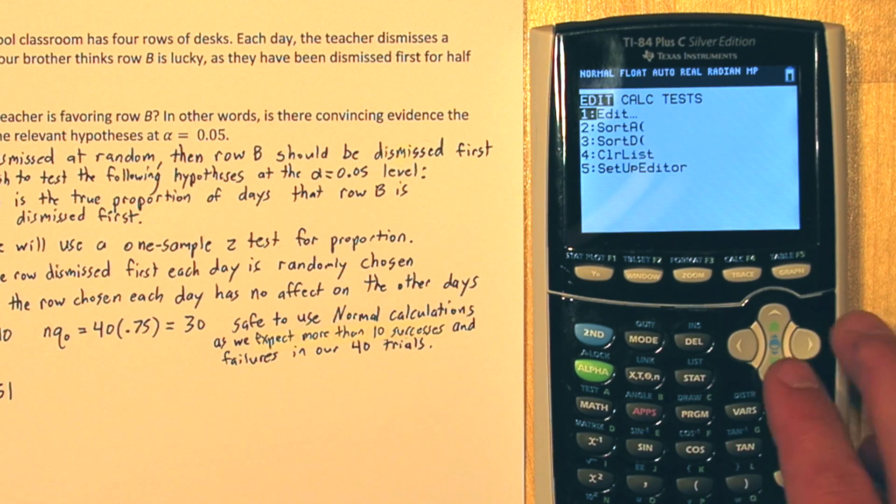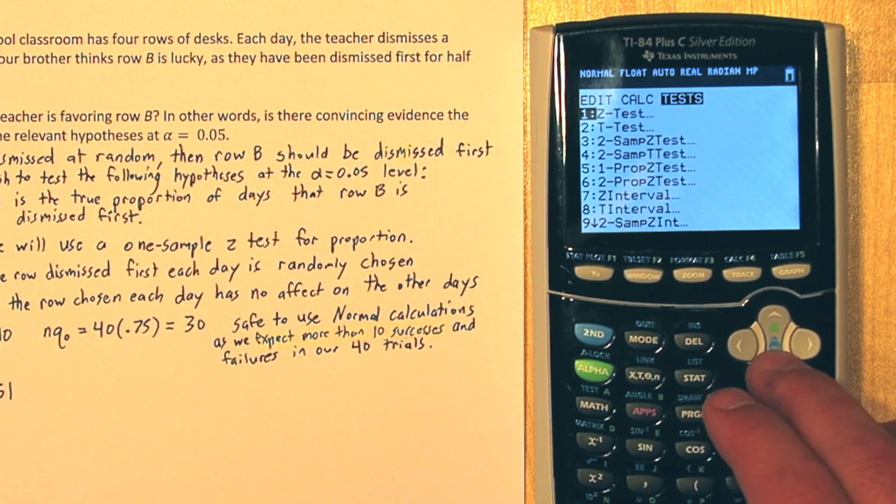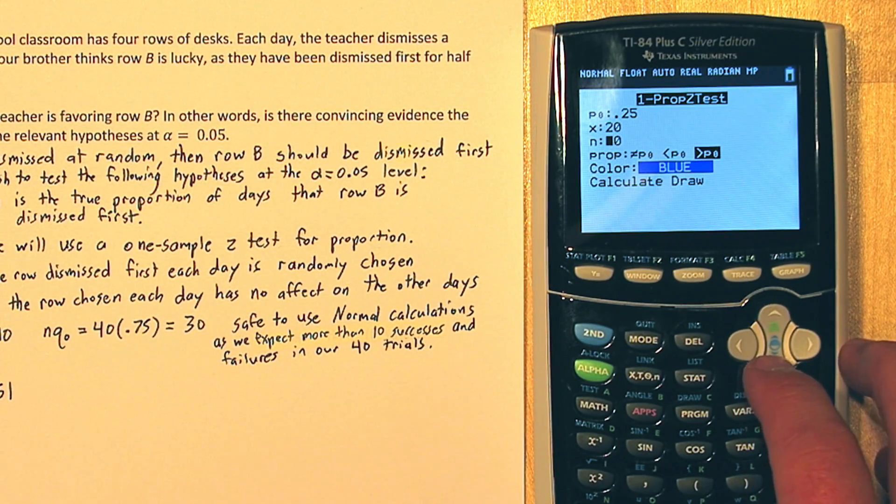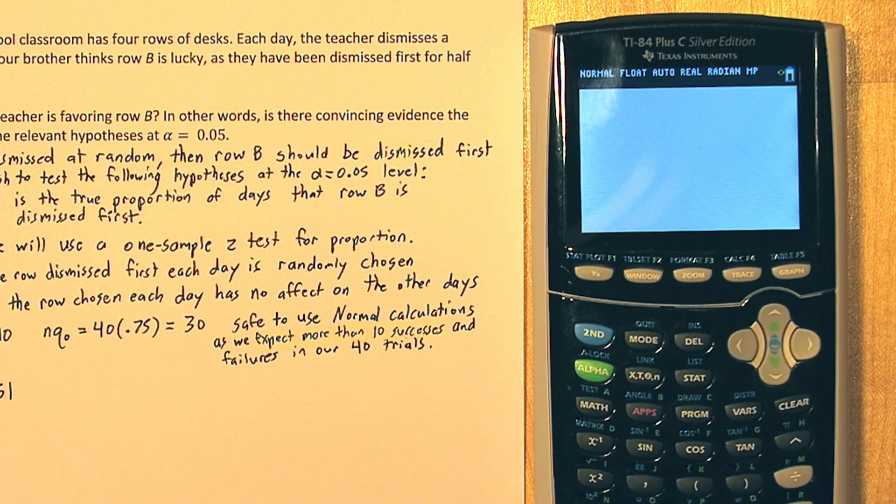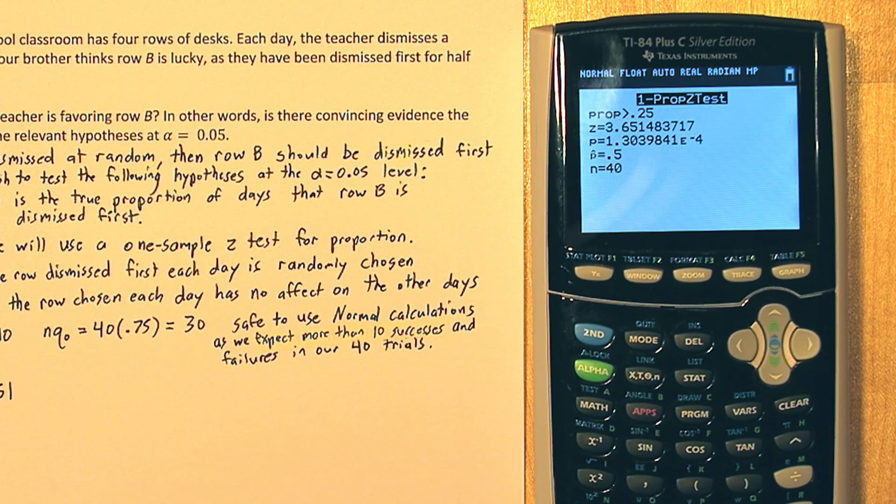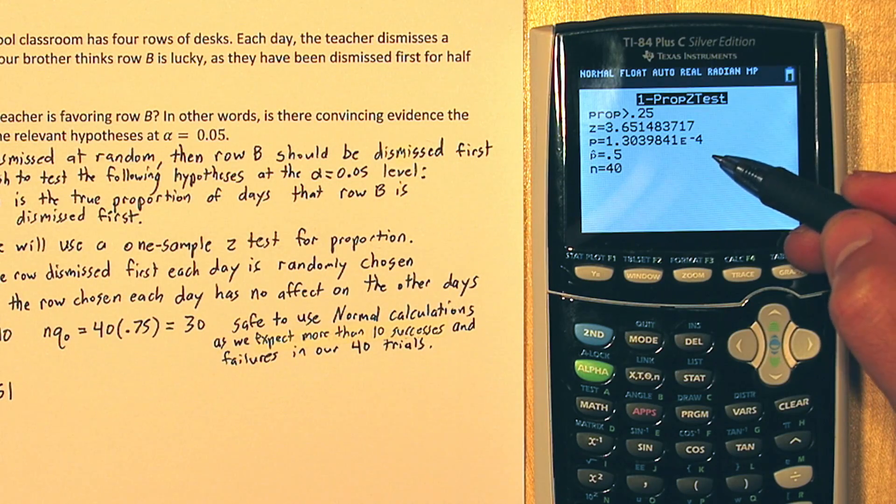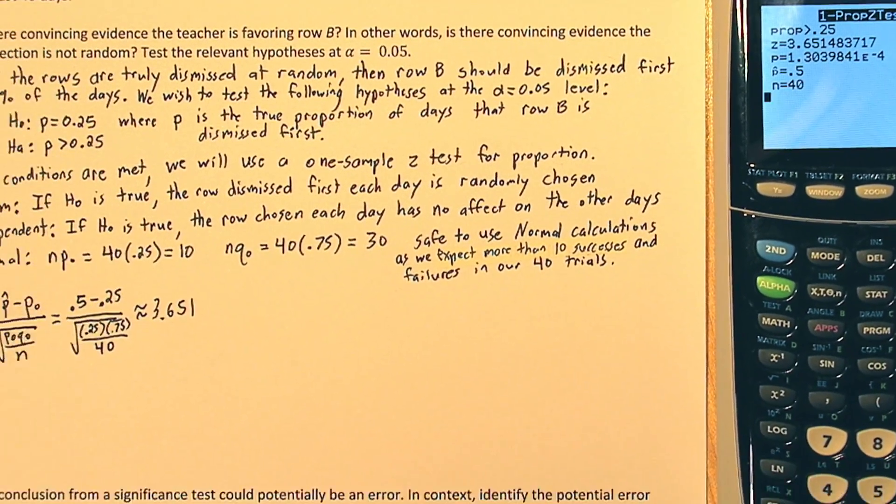Press stat again and go over to test. Choose one prop z-test again, but this time we're going to calculate instead of draw. Now here's our test statistic, about 3.65, and here's our p-value with more digits. So we can see it's a very small number. So let's write down that p-value.